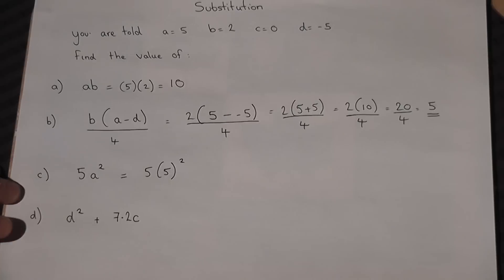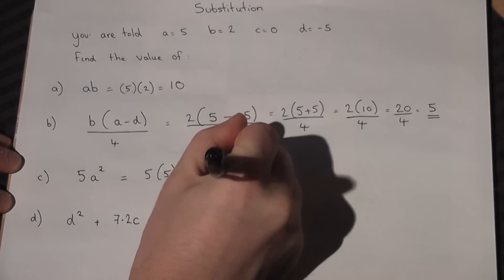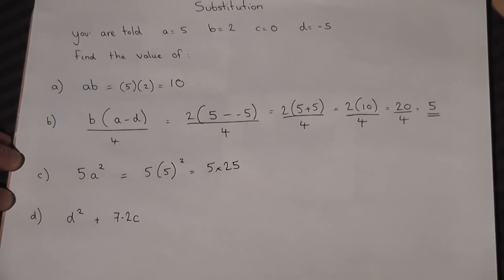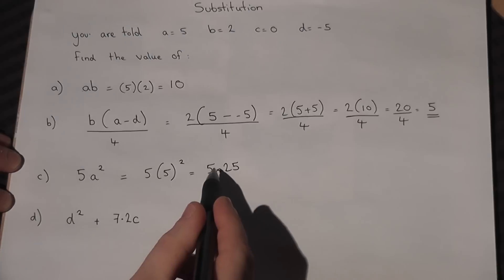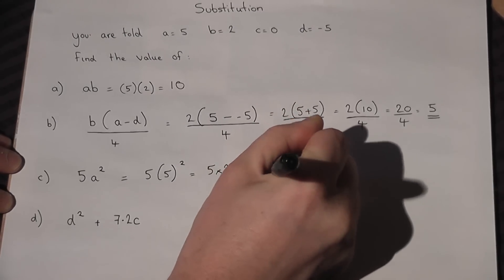For help on this, I'll be doing a video on BIDMAS, which tells us about the order of operations in calculations. Now, 5 squared is 25, so it's 5 lots of 25. 5 times 25 is 125.